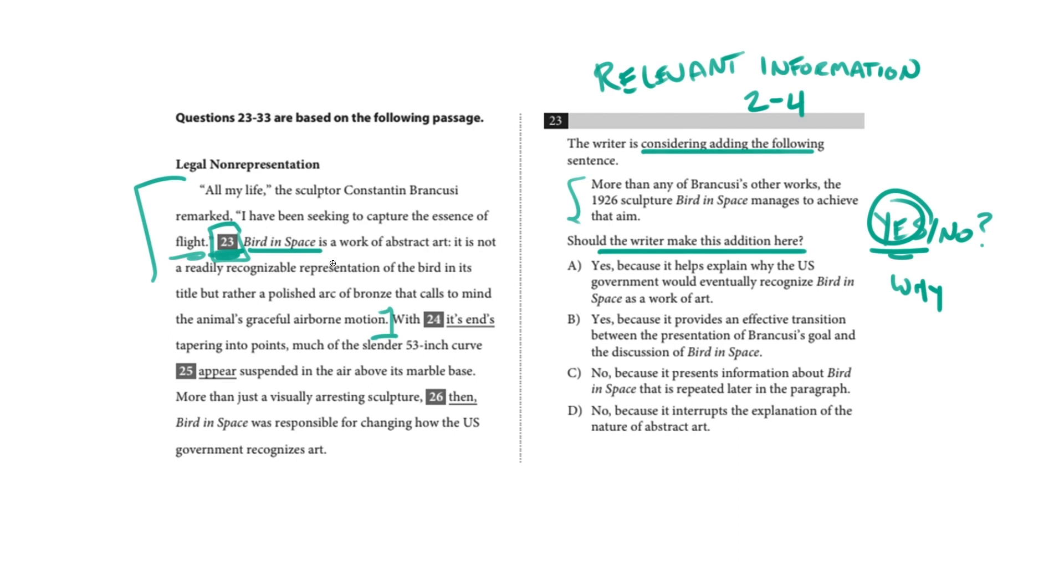it does belong here because, okay, so the second sentence mentions Bird in Space, but it doesn't link Bird in Space to Brancusi. So I'm going to say, I'm going to cross off C and D. We've made our binary decision and now we can focus on the rationale, on why it makes sense to include this information.